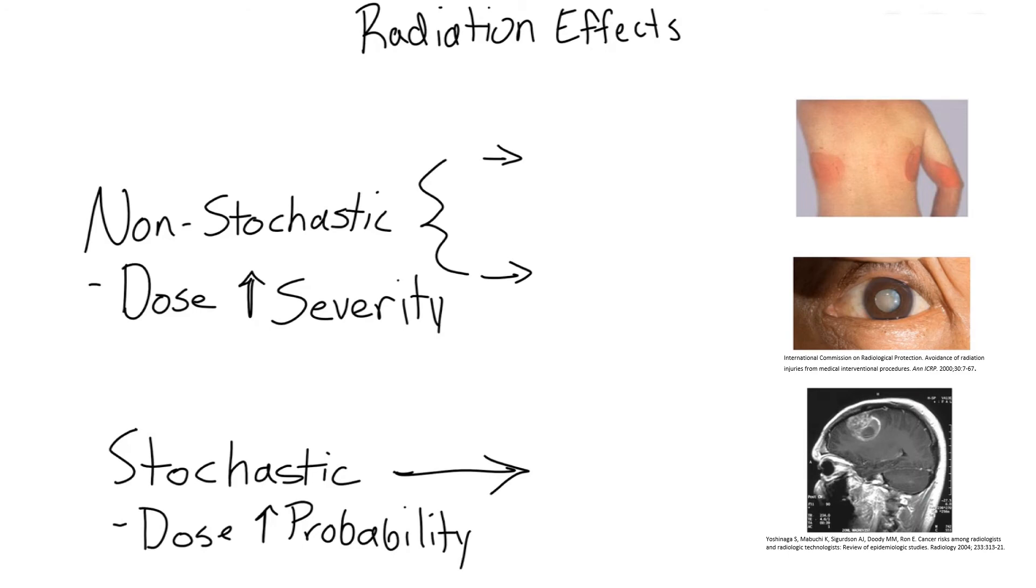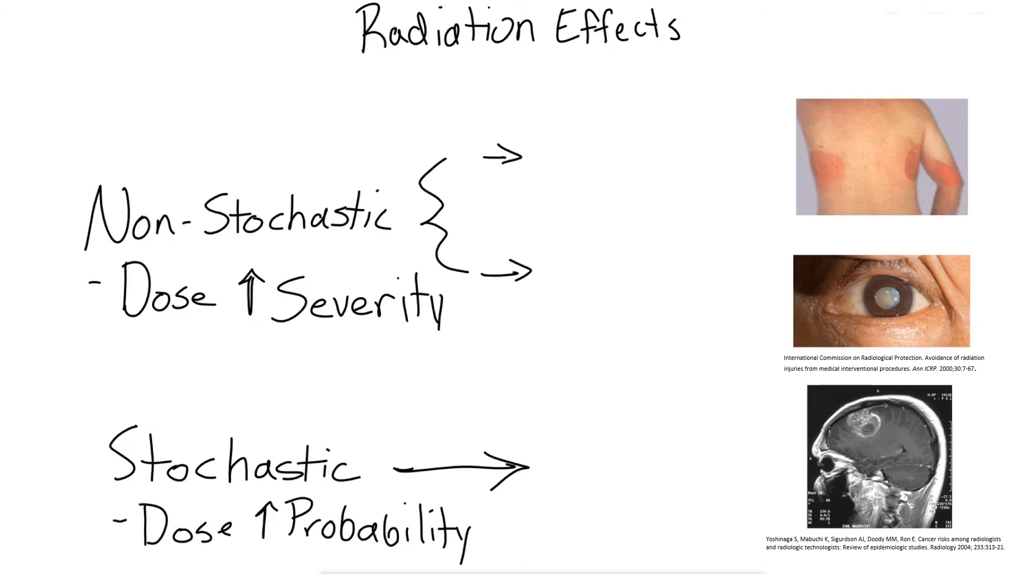So for example, let's go back to our sunbathing demonstration. If you sit out in the sun for a long period of time, you will have more severe sunburn for the longer that you sit out in the sun, the longer that you are exposed. This is a non-stochastic effect, and this happens with cataracts as well.